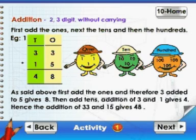As said above, first add the ones, and therefore three added to five gives eight. Then add tens. Addition of three and one gives four. Hence, the addition of thirty-three and fifteen gives forty-eight.